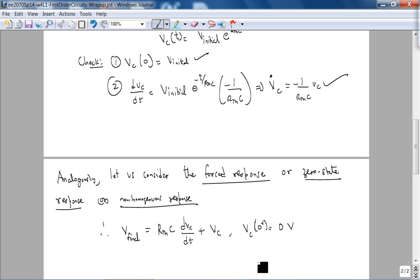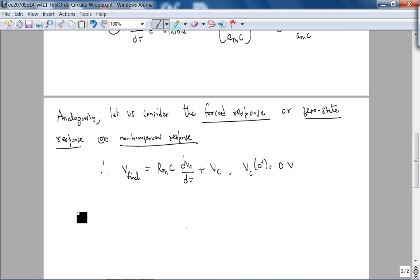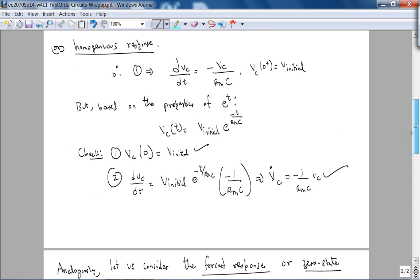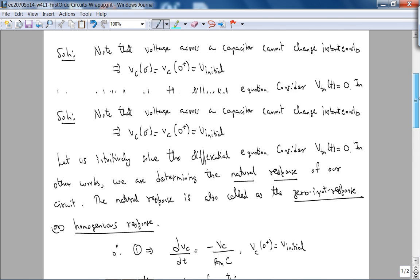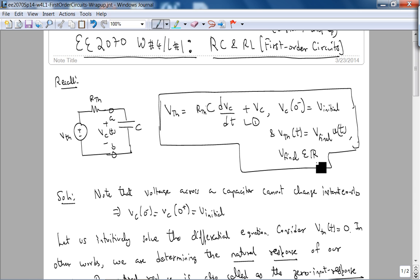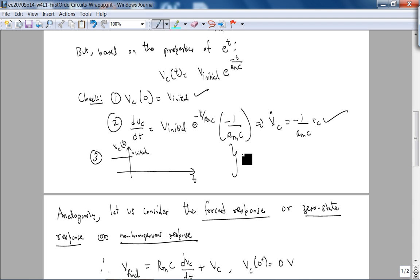I don't think anybody uses the word non-homogeneous - forced or zero state response. What we get is we have some Vth, but something important is V final u of t. The u of t is gone because after t equals zero is when our differential equation acts. This here is dVc/dt plus Vc. Vc of zero plus is zero volts - no initial conditions.